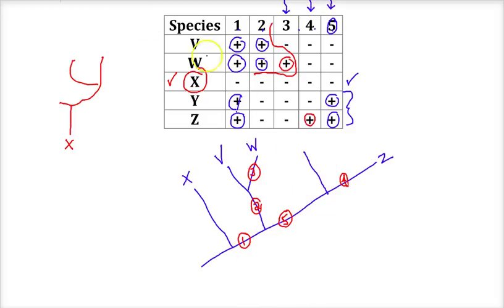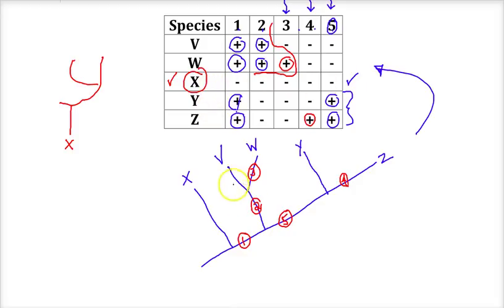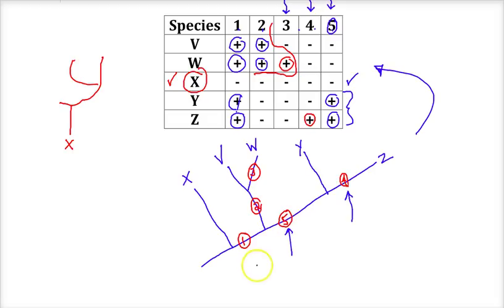By putting the traits in my cladogram, I can follow and match the traits posted in the table. X is below the first trait, so it has none. V has traits 1 and 2. W has traits 1, 2, and 3. Y has traits 1 and 5. Z has traits 1, 5, and 4. It's very helpful to note where the traits evolved in your cladogram.